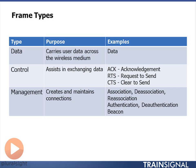The 802.11 standards initially defined three frame types: data, control, and management. Every MAC frame sent between an 802.11 client and an 802.11 access point will be one of these frame types. Authentication, association, and beacons are management frames, and they are used to create and maintain a connection between the station, the client, and the access point.